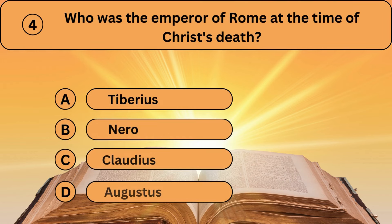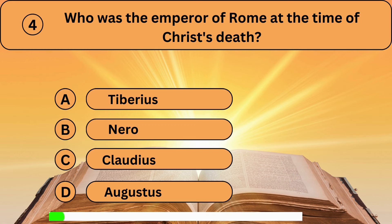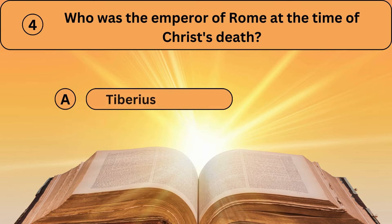Question four. Who was the emperor of Rome at the time of Christ's death? A. Tiberius. B. Nero. C. Claudius. D. Augustus. Tiberius is the correct answer.